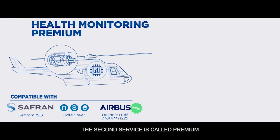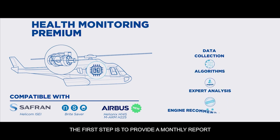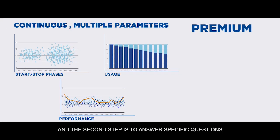The second step is called Premium. It's based on continuous flight data. The first step is to provide a monthly report based on the fleet data, and the second step is to answer specific questions.